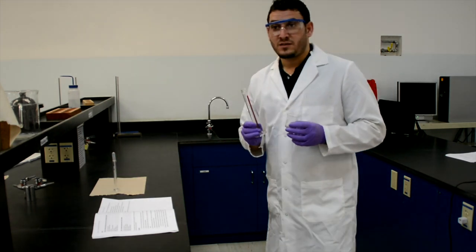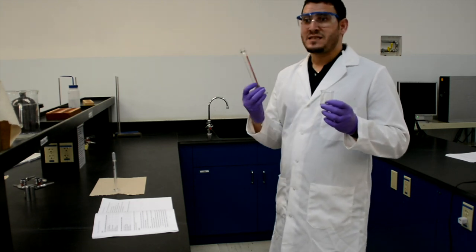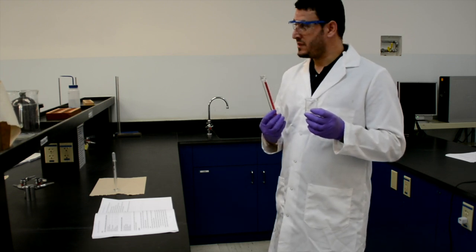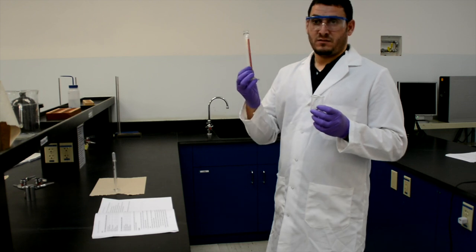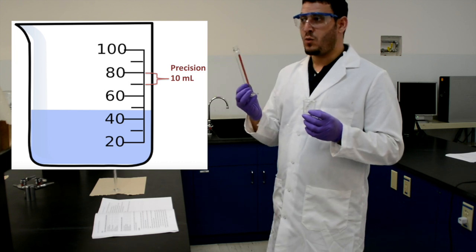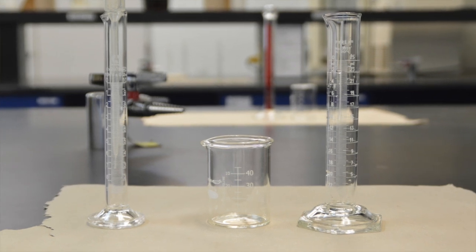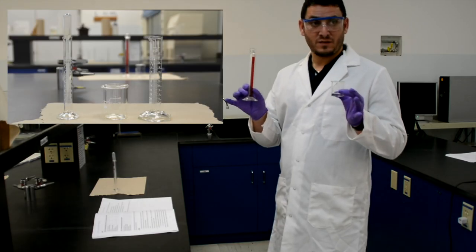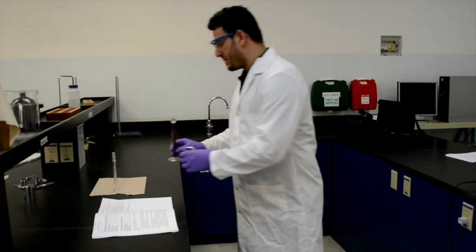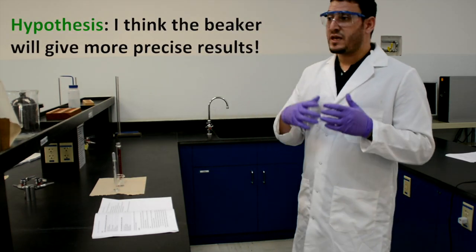By looking at the graduation on the glassware, you can tell which glassware is more precise. The glassware that gives more precise measurements is the one that has a smaller unit. You have these two glassware here — I'll let you judge which one you think will give more precise measurements.